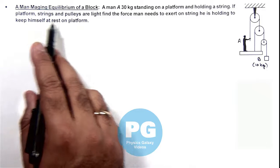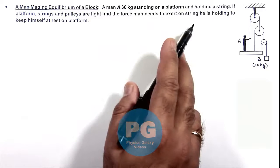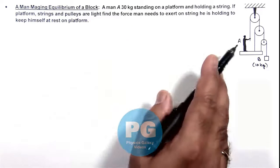If platform, strings, and pulleys are light, we are required to find the force man needs to exert on string he is holding to keep himself at rest on the platform.